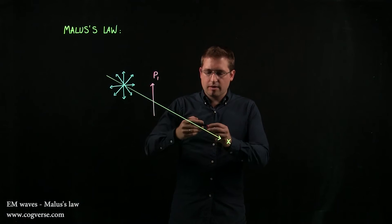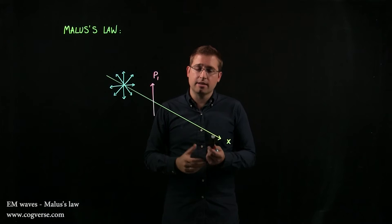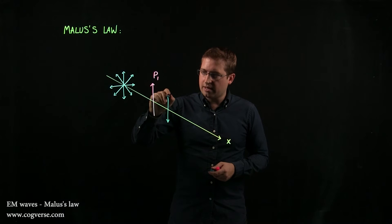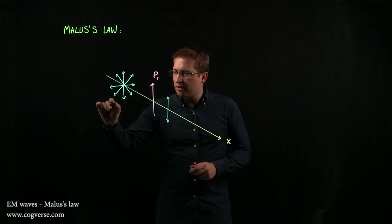That will therefore eliminate all the horizontal components of the unpolarized light as it passes through. And as a result, you'll get polarized light in the vertical direction after P1.